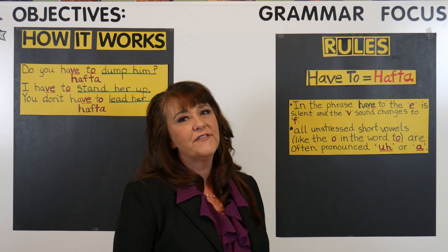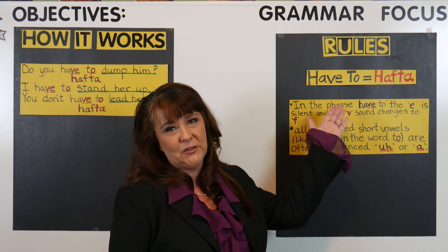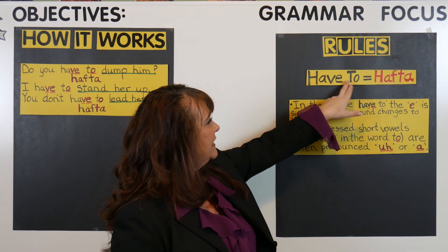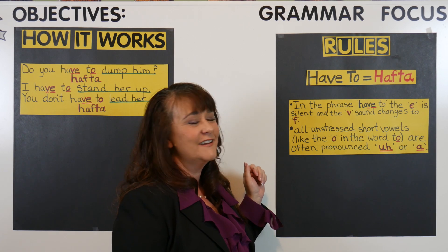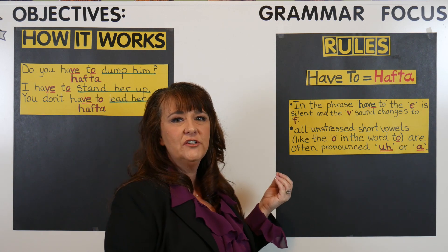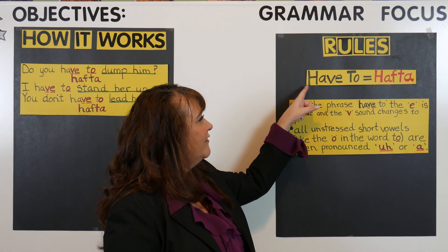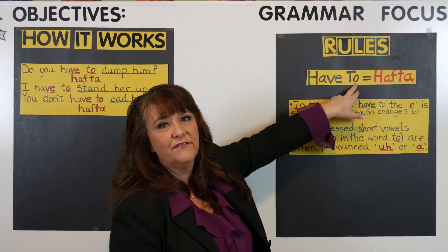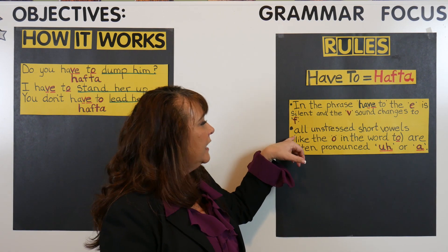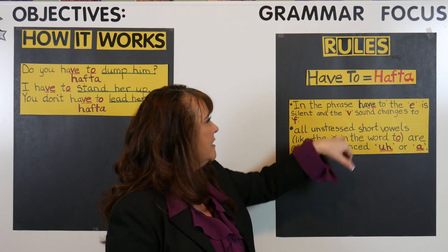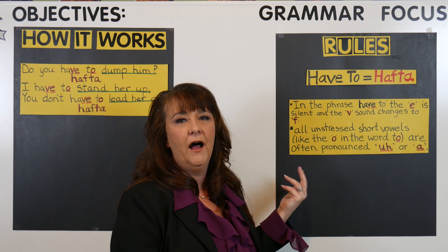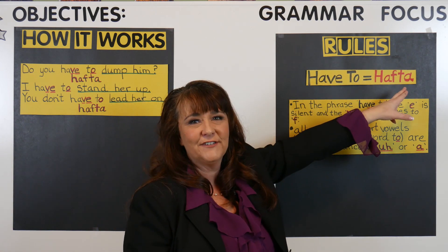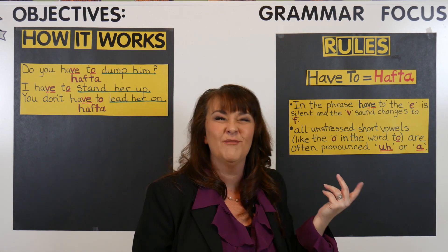Let's look at some of the rules of the how and the why that the phrase 'have to' turns into 'hafta.' In this phrase, the E is silent — you know that. But what you might not know is that the letter V changes to the F sound, so we have 'half' instead of 'have.' The other thing happening here has to do with the vowel in the word 'to.' Because the letter O is an unstressed short vowel, it is pronounced 'uh,' so this sounds like 'tuh.' Half-tuh. Let's look at some examples and see if it becomes a little easier to understand.